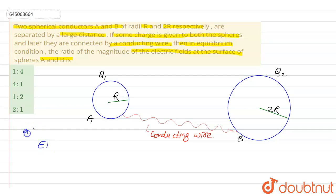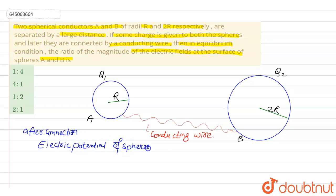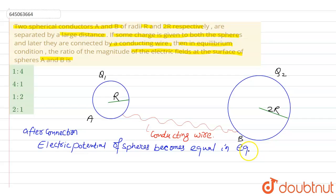After connection, the electric potential of the two spheres becomes equal in equilibrium. Some charge transfer from sphere 1 to sphere 2 will take place, and in the equilibrium condition the charges will arrange themselves such that the electric potential of the two spheres is the same.